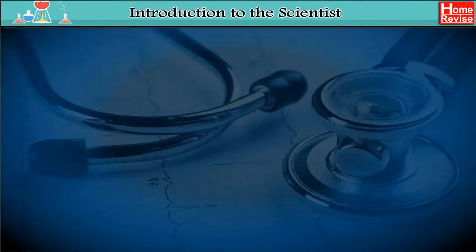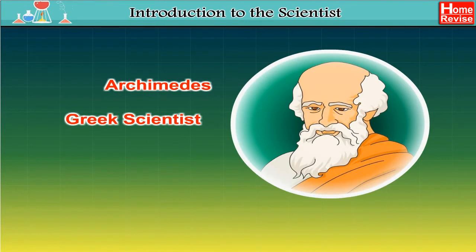Introduction to the scientist: Archimedes was a Greek scientist and a mathematician with sharp intelligence. He found out the value of π by numerical calculations.